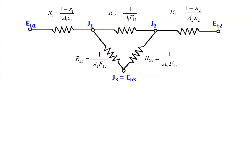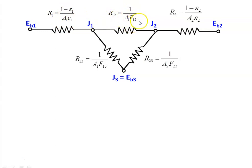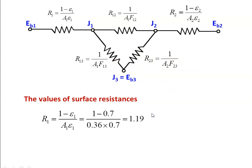This is the radiation network. We have the emissive power of the first and second bodies, and the atmosphere has no surface resistance at Eb3. The surface resistance of plate 1: R1 = (1 − ε1) / (A1 · ε1). R12 = 1 / (A1 · F12). R2 = (1 − ε2) / (A2 · ε2). R13 = 1 / (A1 · F13). R23 = 1 / (A2 · F23).